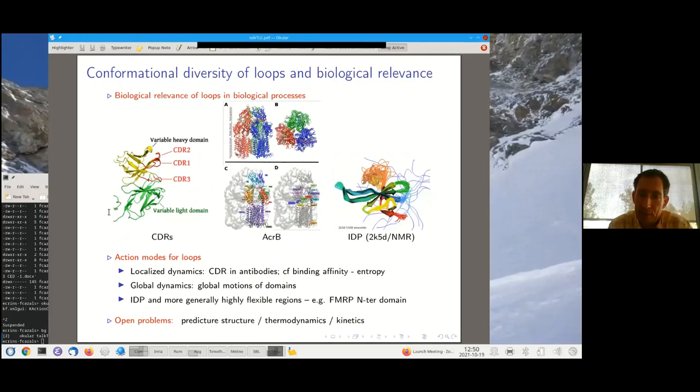And of course, the last example, I picked the case of IDPs, intrinsically disordered proteins, and more generally that of highly flexible proteins such as the FMRP enter domain Carol talked about. And so in all these cases, we need to predict either the structure or the thermodynamics, for example, the binding affinity between a protein and its partner.